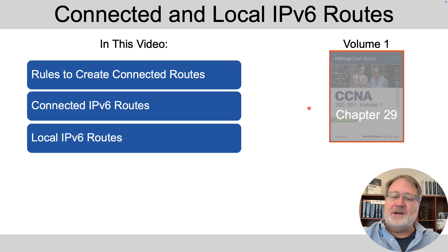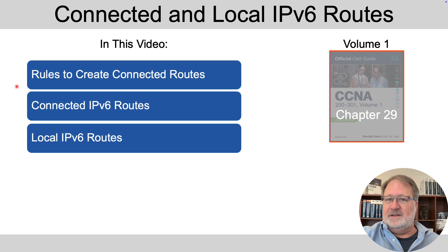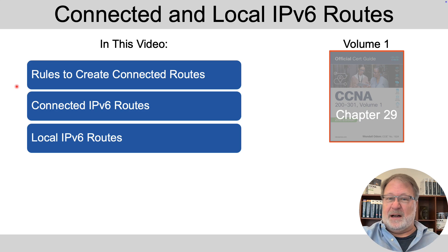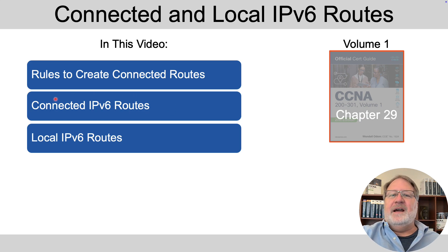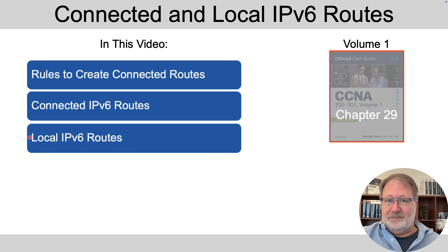In this video, I talk about it in this order. We'll talk about the rules that cause a router to create connected routes. Then we'll talk about the connected routes themselves with lots of show command output. And then a related and far less important topic — local IPv6 routes. It's just a good time to talk about them, so I put them here in this video.